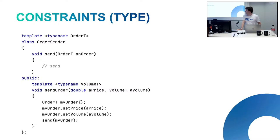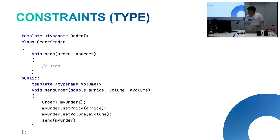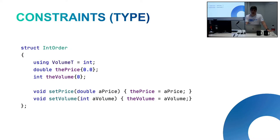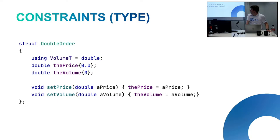Let's look at how we constrain things when you have a type. If we want to have some class that sends orders, and we have a message called OrderT — just a type of order — and we want to make that class as fast as possible, we want a specific class for each order type. Inside it there's a public method called sendOrder which takes a price and volume, sets the price, sets the volume, and sends the order off to the exchange.